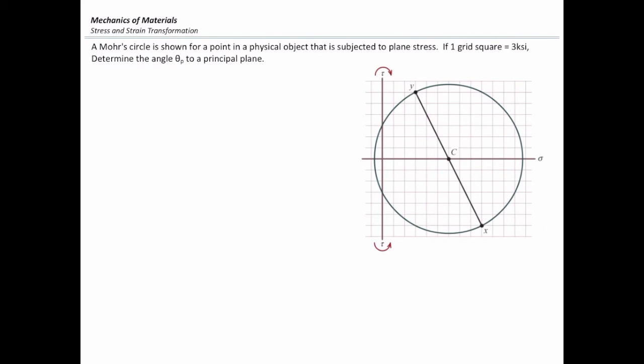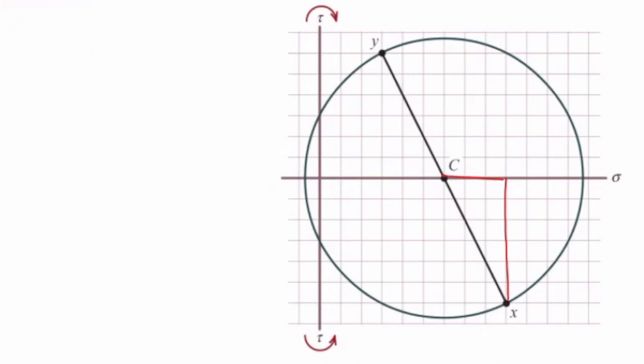We need to consider this triangle over here. This edge would be 6, this edge would be 3. And theta is calculated from this equation: tangent of 2 theta P is 6 over 3. One common mistake is not dividing that by 2. Just make sure that this equation gives you 2 theta.